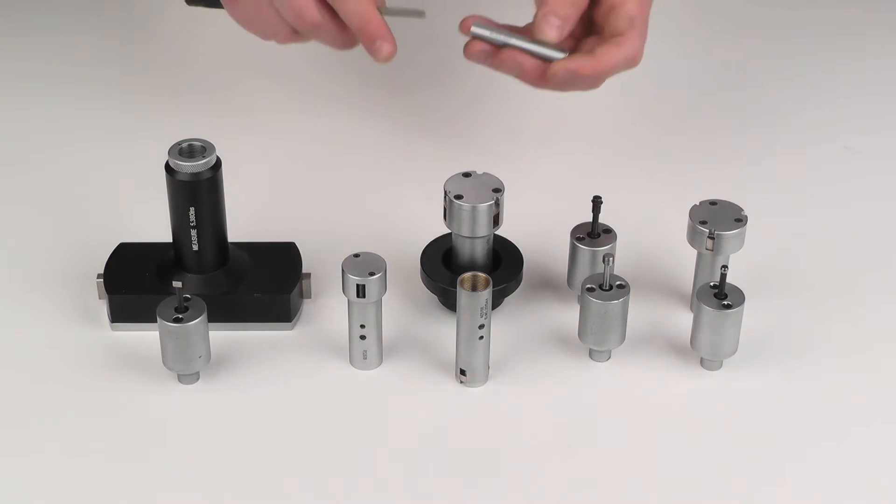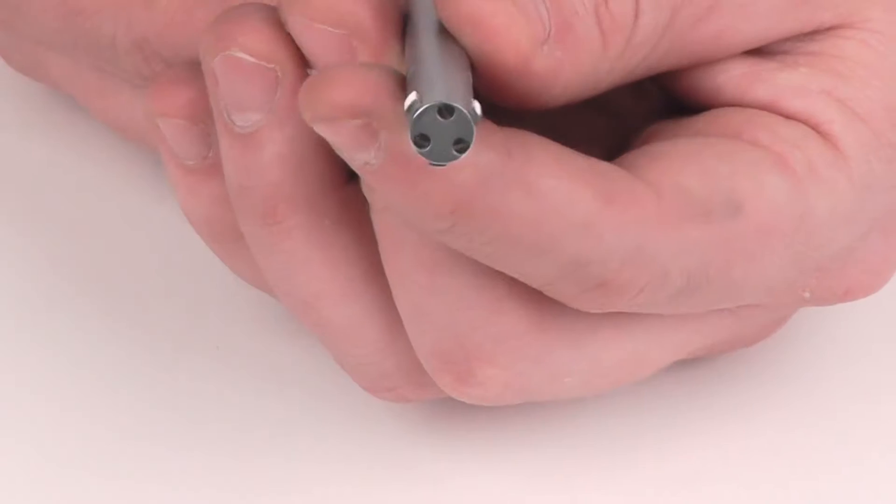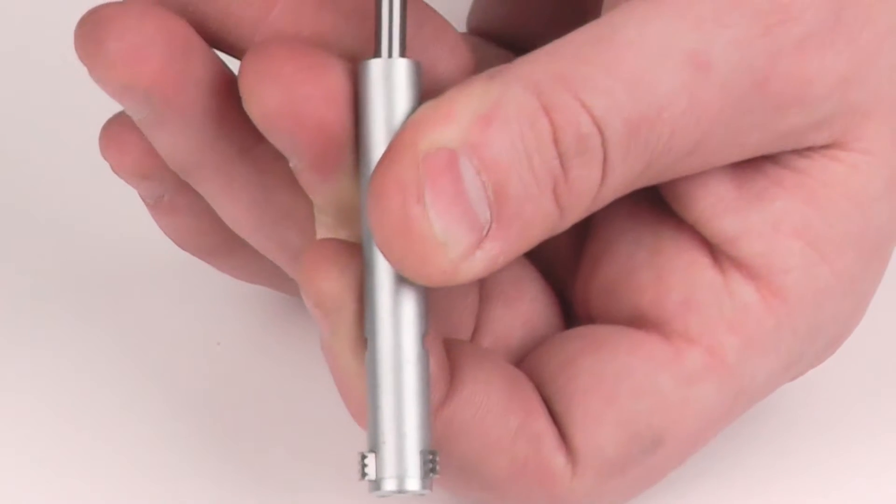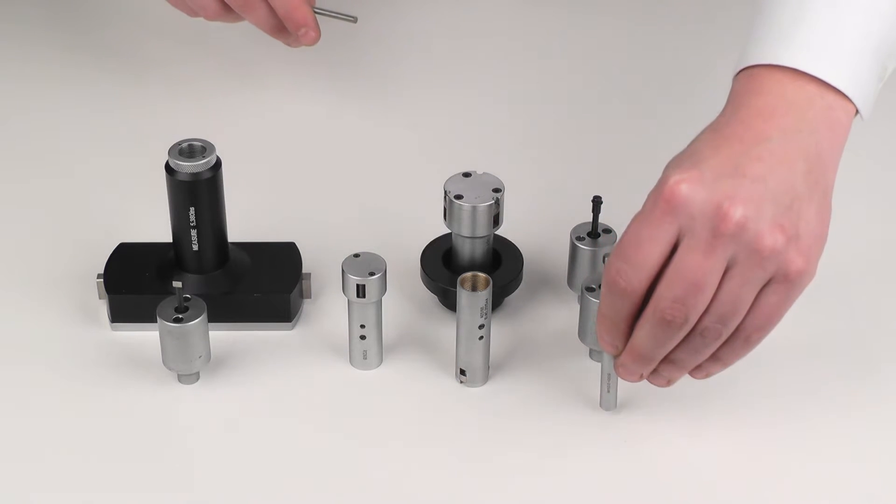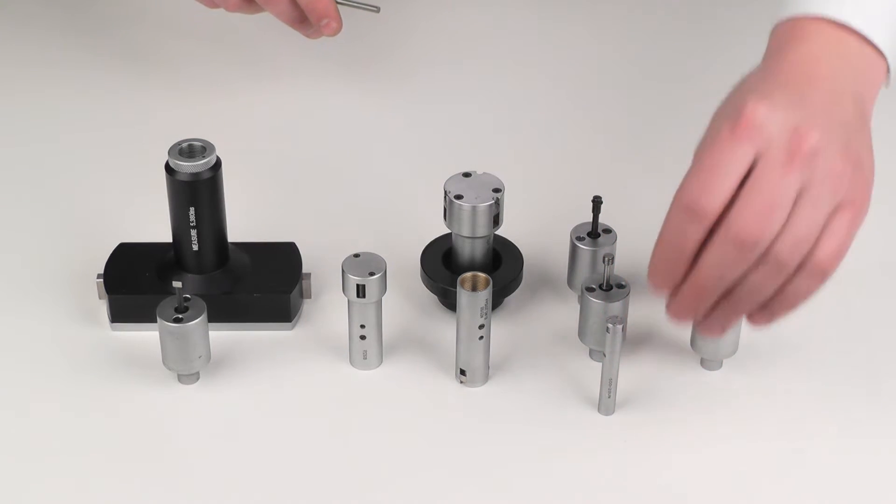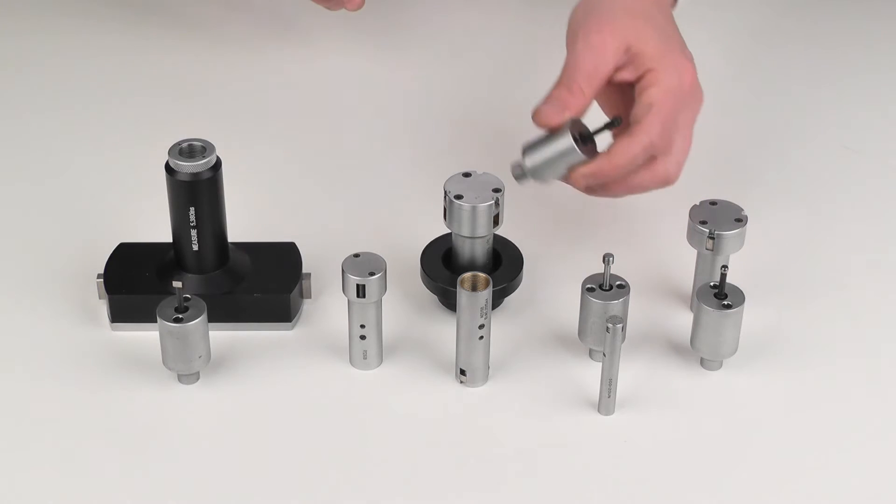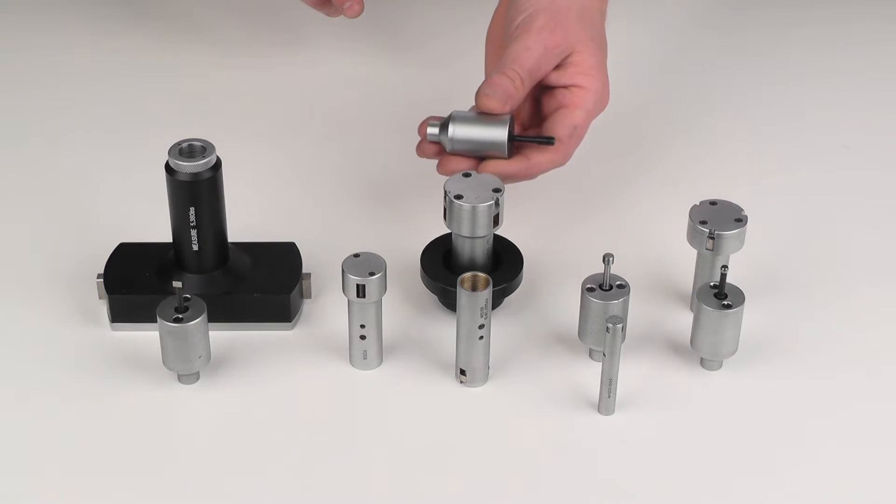For the thread measuring system, there is the possibility of having a multi-point measurement, or if a closer look is intended for the pitch diameter of a single thread, it can be cut with just a single thread as well.